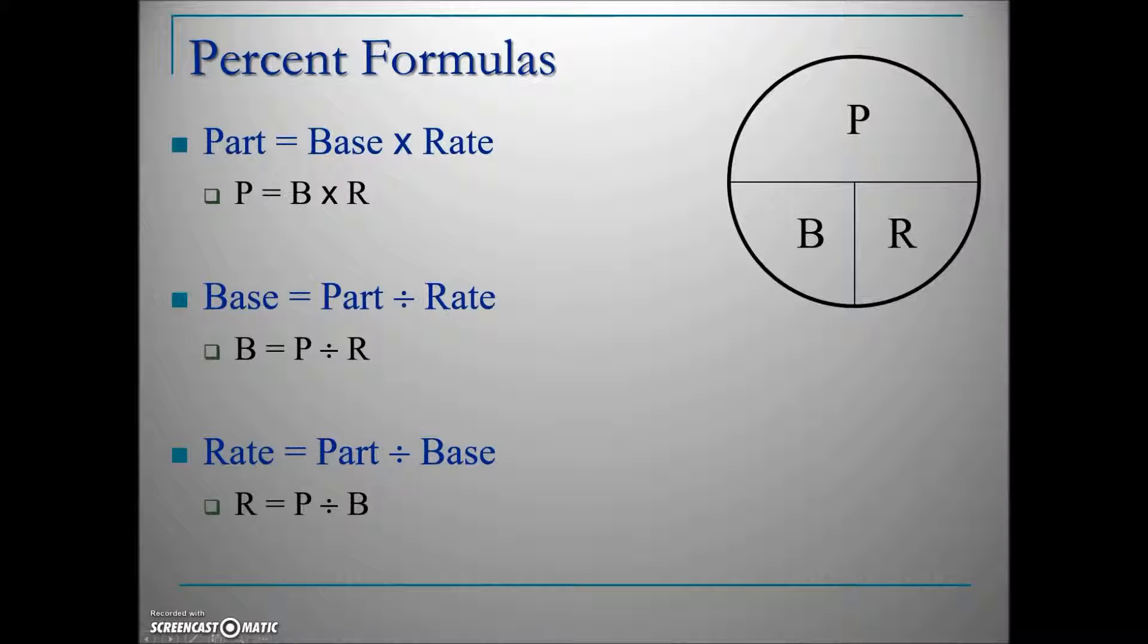This relationship is illustrated in this circle. If we're solving for part, cover up the part—it leaves base next to rate, meaning we multiply base times rate. If solving for base, cover up the base—that leaves P over R, or part divided by rate.